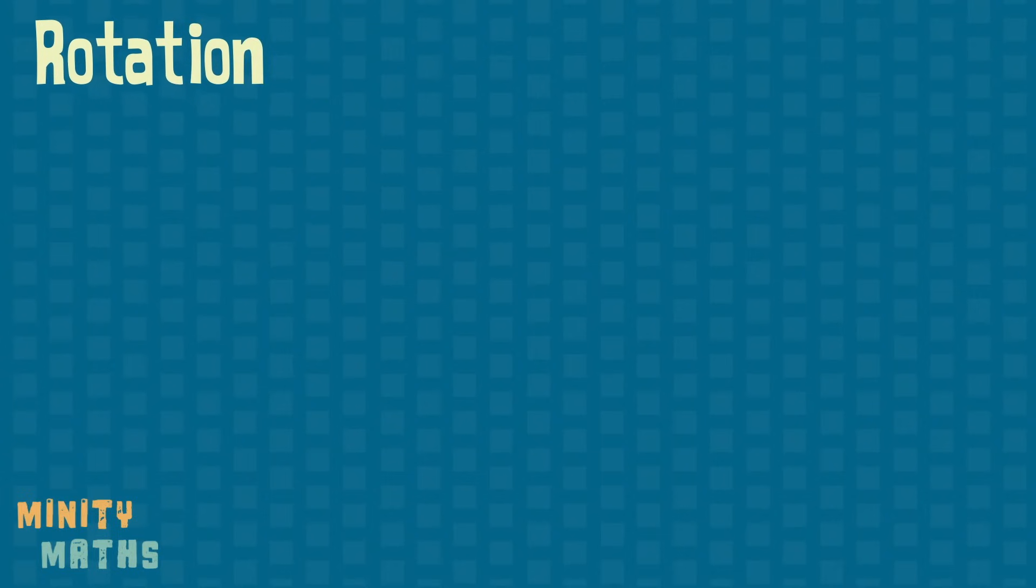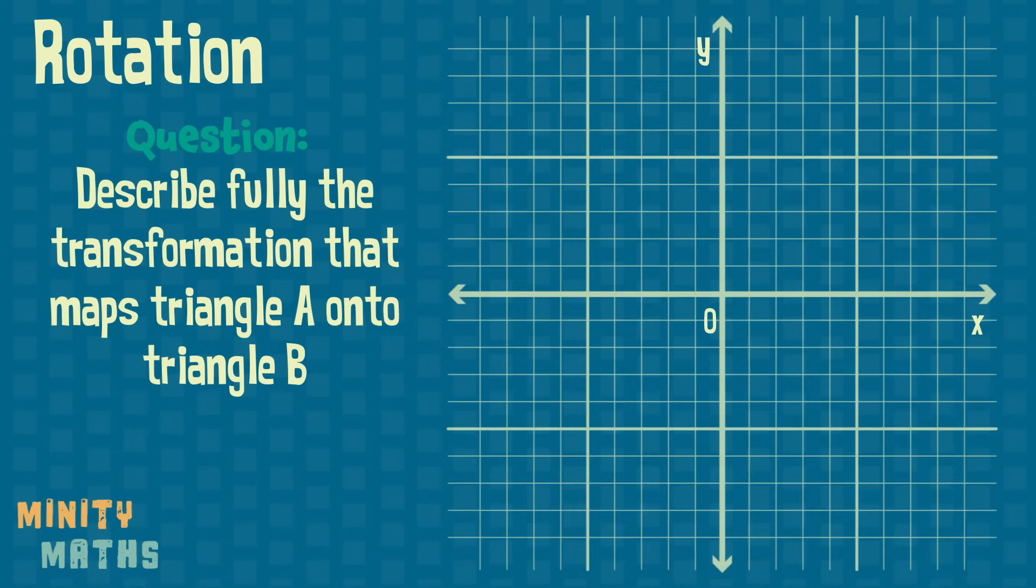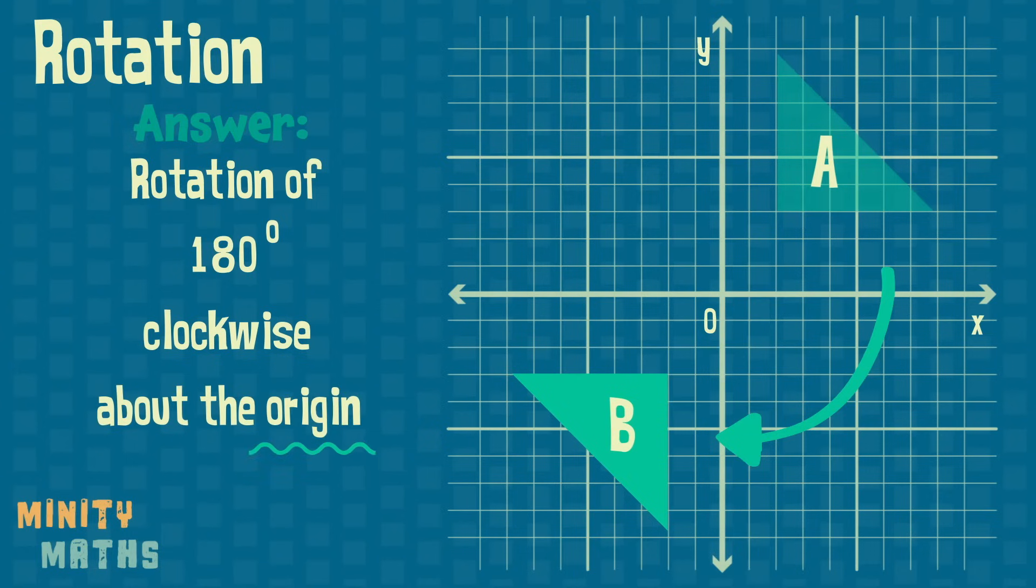Rotation also changes the shape's position. To describe rotation, we must provide three details: the angle of rotation, the direction, and finally the center of rotation. You may find tracing paper helps with finding the point that the shape has been rotated around.